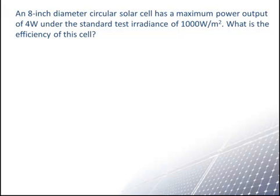First, we need to calculate the area of the cell. We convert the diameter to meters by multiplying the 8-inch diameter by the conversion factor of 0.0254 meter per inch, giving 0.203 meter. We then apply the well-known formula for the area of a circle, A equals one-quarter times π times the diameter squared.